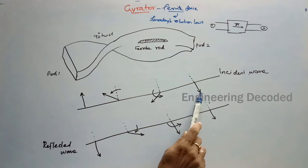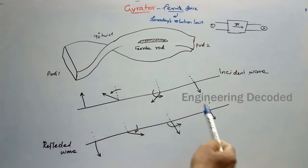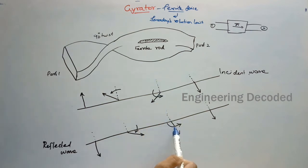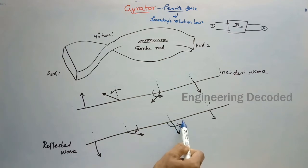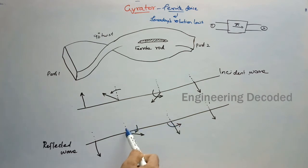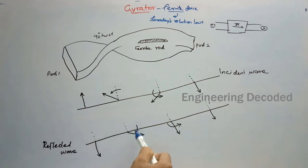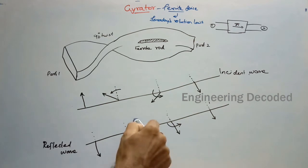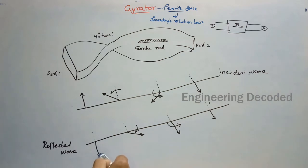That is at port 2. Now if this signal at port 2 is sent back, what happens? This ferrite rod will try to shift the signal by 90 degrees in the clockwise direction. This signal will be travelling to the 90 degree twist, and this 90 degree twist will try to twist the signal again in the clockwise direction. So the signal tries to move in this direction, and this twist tries to move this signal in the opposite direction.